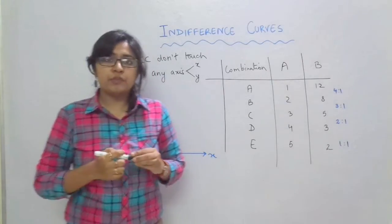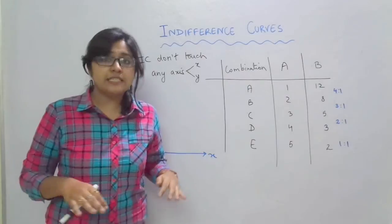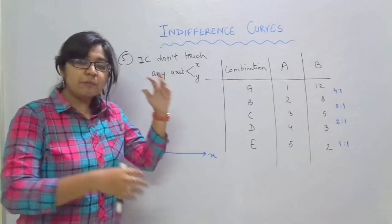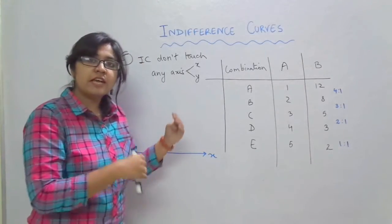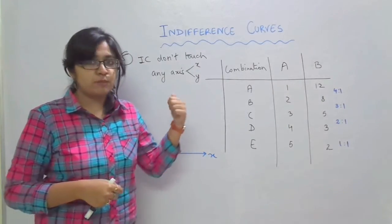Like the fourth property that we did was indifference curves do not intersect each other. So we made two indifference curves and then we intersected them and then we saw how the property is proven to be right.